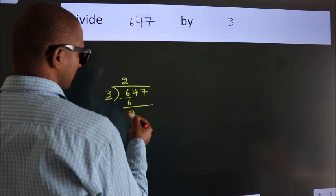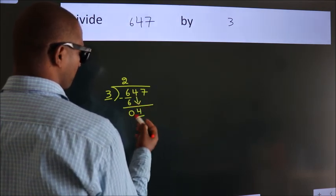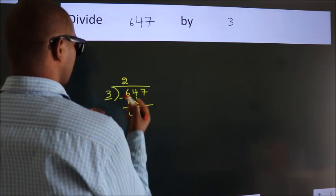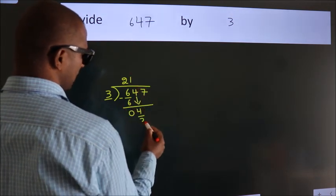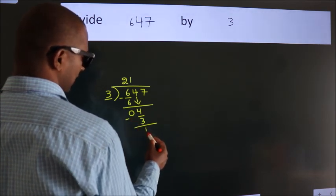After this, bring down the beside number. So, 4 down. A number close to 4 in 3 table is 3 1s, 3. Now, we subtract. We get 1.